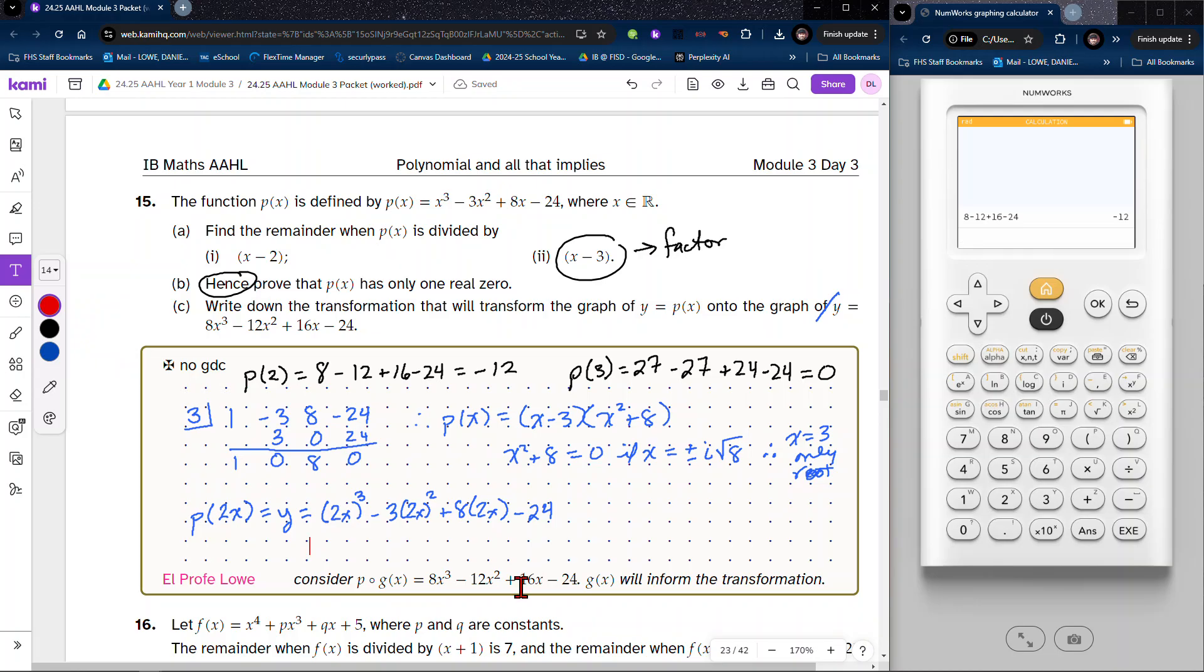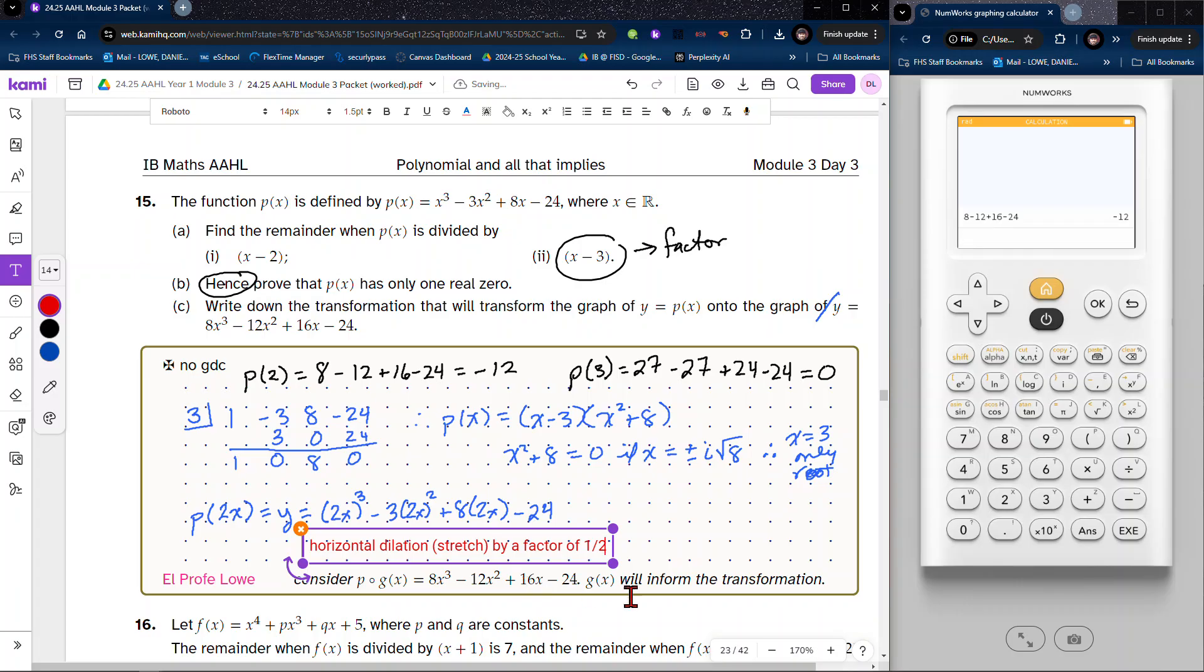And so then we know the transformation that will get us from one graph to the other is going to be a horizontal dilation, or you could say a horizontal stretch. We're going to be dividing all our x values by 2.